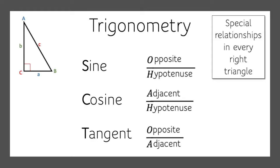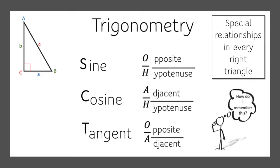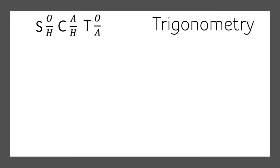I'll explain what those all mean in just a second. But the first problem is, how do I remember this? Here's a trick I use — I think about it as a word: SOH-CAH-TOA. If you can remember SOH-CAH-TOA — sine, opposite over hypotenuse; cosine, adjacent over hypotenuse; tangent, opposite over adjacent — you'll be good to go.